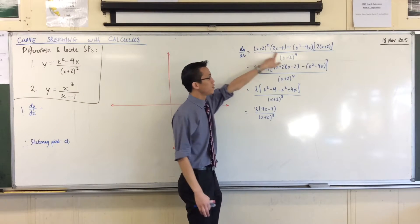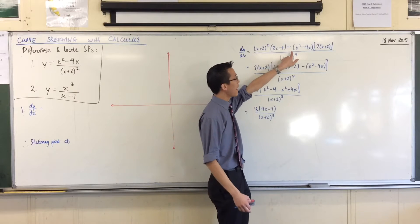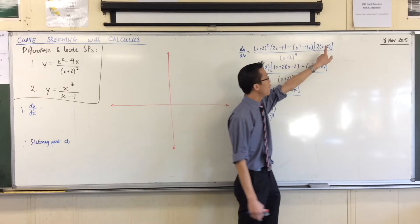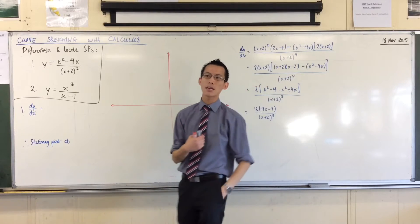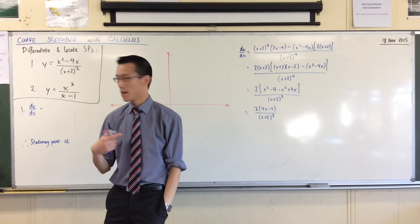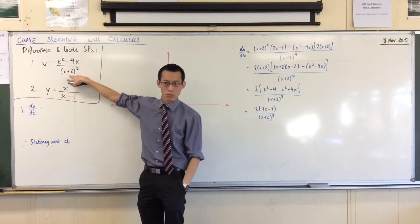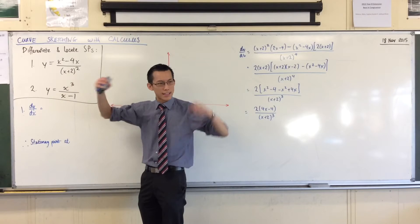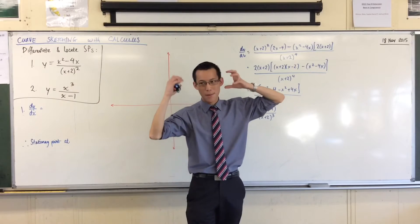So, v, u dash, no surprises there, take away, u, v dash. Now, when I get to v dash, do you notice how I've written it? Can you see that what I'm doing is I'm using the chain rule on the denominator, okay? It starts to get a little bit, whoa, stuff in my head too much.